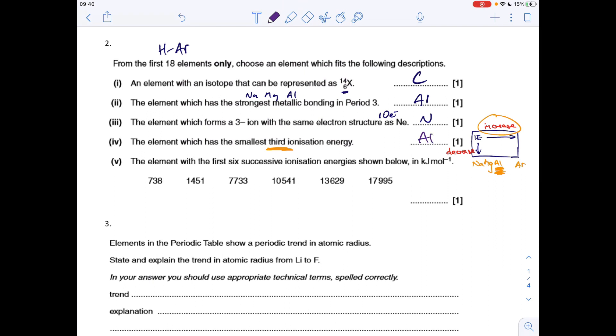And the final question, we're basically looking for a big jump to establish which group it's in. So we've got the first big jump there between the second and third ionisation energy, so it's got to be in group two. It can't be beryllium because beryllium only has four electrons, so it's going to be magnesium.